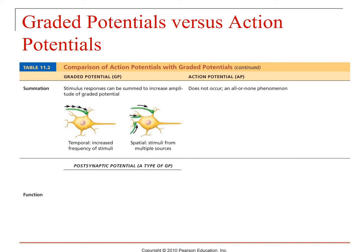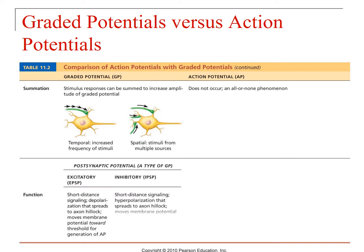It is an all-or-none phenomenon. With respect to postsynaptic potentials, you can have excitatory EPSPs, which move you towards threshold for generating an action potential, or inhibitory IPSPs, which move your membrane potential away from threshold. With an action potential, you've got long-distance signaling as the nerve impulse — there really isn't a postsynaptic potential with action potentials because they occur at the axon hillock and move down the axon.